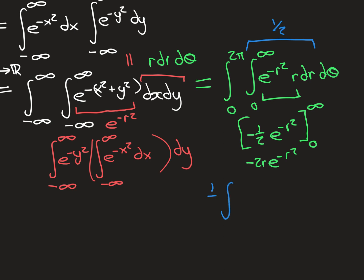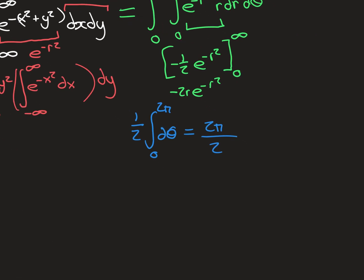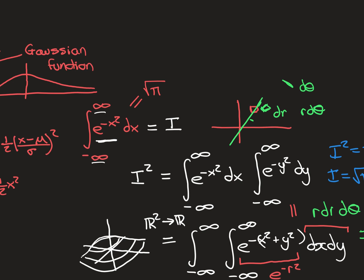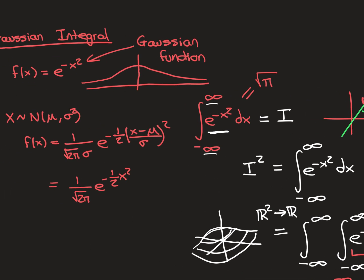We've then got the integral from 0 to 2π of ½ dθ, which is just ½ times 2π = π. And remember, this was I squared, not I. So I squared equals π, and therefore I — the Gaussian integral — is the square root of π, which matches what we deduced from the normal distribution formulas.